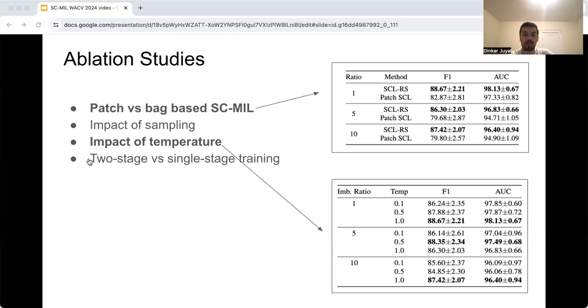We performed a few ablations to understand the impact of architectural choices and training hyperparameters on the performance. In the first experiment, we trained a patch-level version of SCMIL, where we naively assign the bag-level label to instances and then apply supervised contrastive loss. This patch-level SCMIL has inferior performance and higher variance as compared to our formulation, providing evidence that the bag-level formulation is more robust. We also experimented with temperature values of 0.1, 0.5, and 1, and found that the models are generally robust to temperature changes. We reasoned that this is because of the low number of classes in our setting, unlike datasets like ImageNet, where the number of classes is large and higher values of temperature harm feature quality.